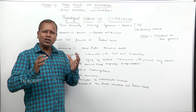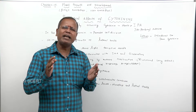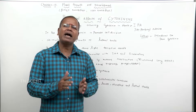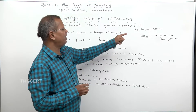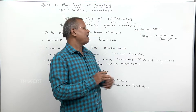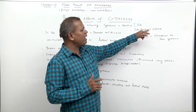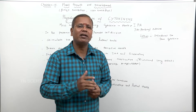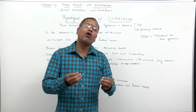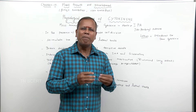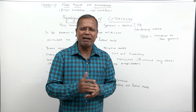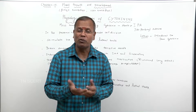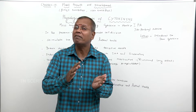The most commonly occurring cytokinin in plants is IPA — Isopentanyl adenine. Note that IAA (Indole-3-acetic acid), IBA (Indole-butyric acid), PA (Phenyl-acetic acid), and NAA (Naphthalene-acetic acid) are all related to auxins, not cytokinins.